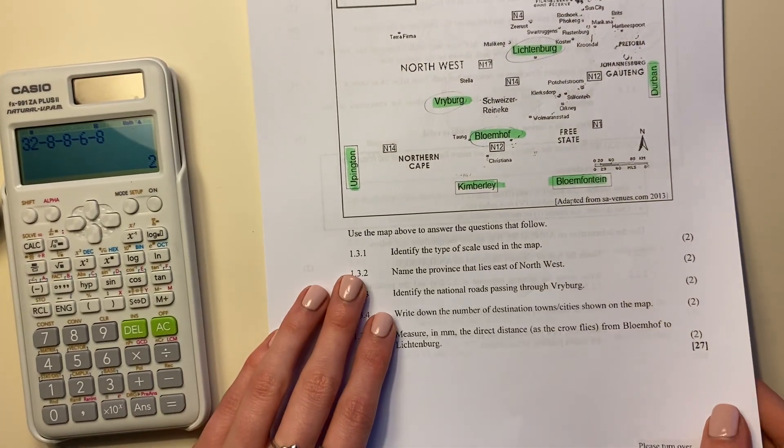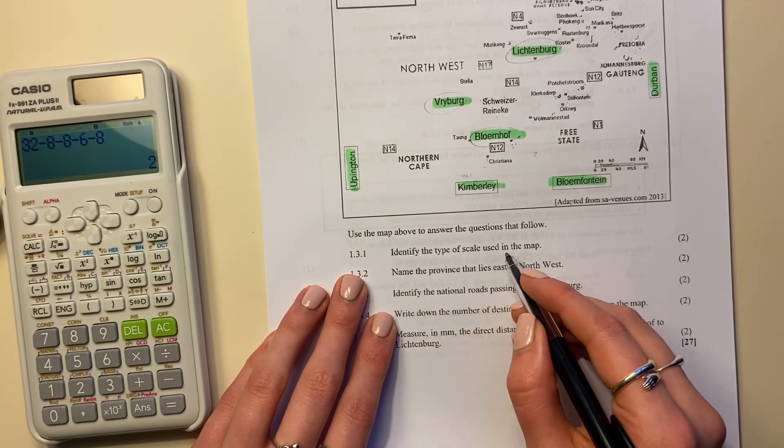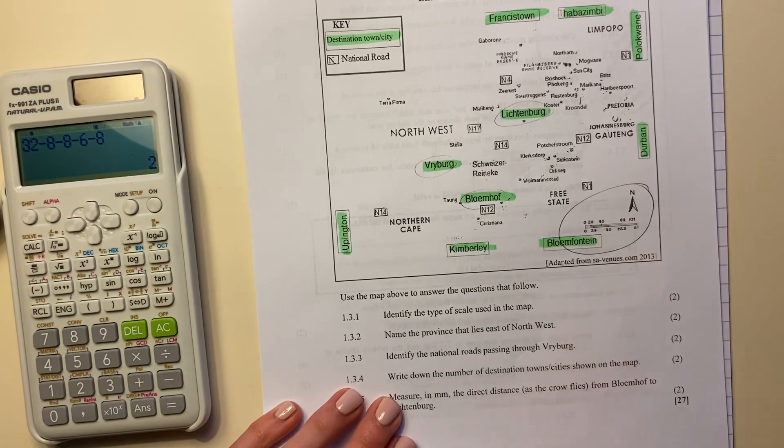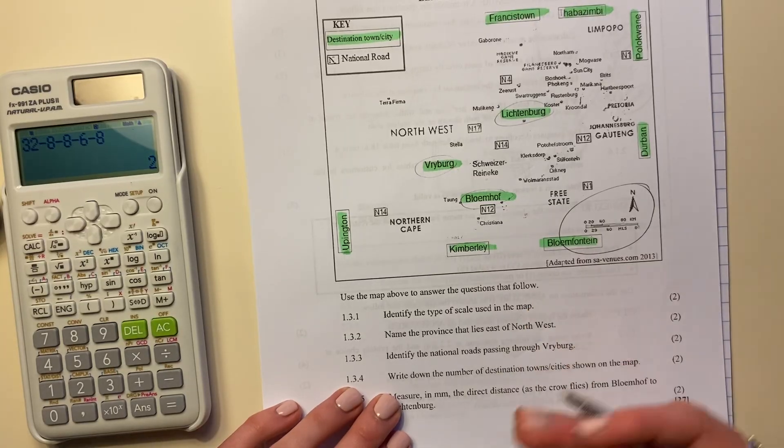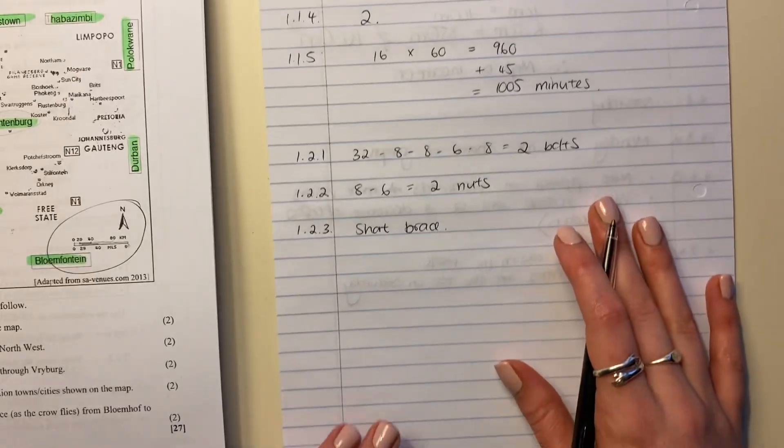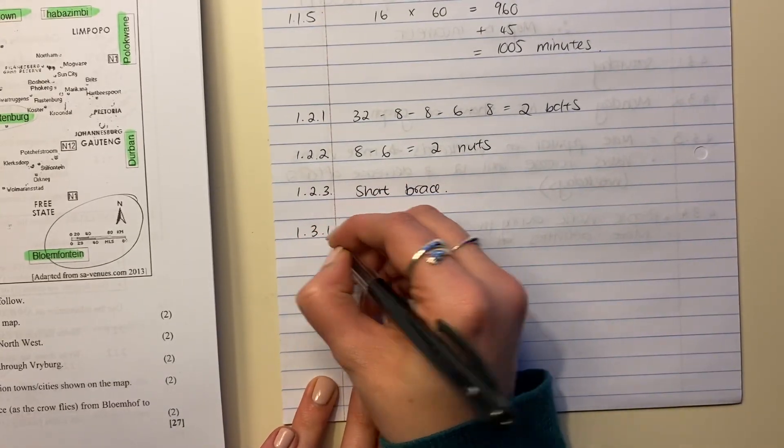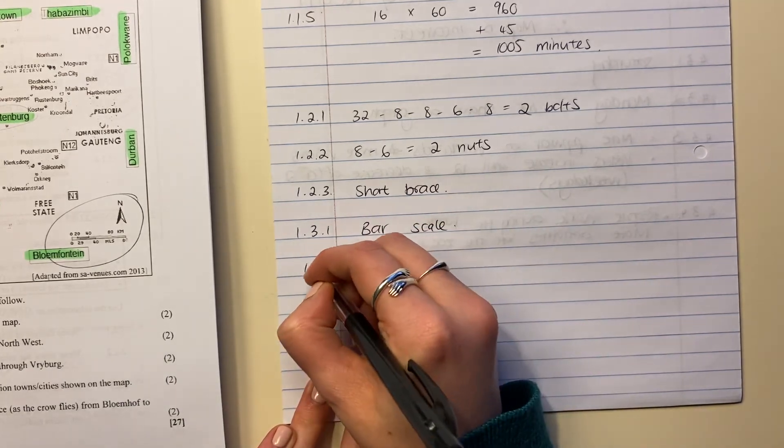1.3.1 says identify, using the map, the type of scale used in the map. Now look over there. There's the scale. What we call that is we call that a line scale or a bar scale, or graphic scale. You can use any of those. I'm going to just say because it's easy for me to write down, I'm just going to say it is a bar scale. And then we can move on.